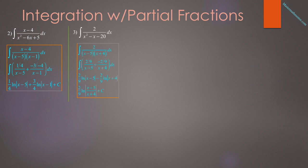In problem 3, we integrate 2 over (x² − x − 20). The denominator factors into (x − 5)(x + 4), giving two partial fractions. When x = 5 we get 2/9 for the first fraction; when x = −4 we get −2/9 for the second. This leaves us with (2/9) ln|x − 5| − (2/9) ln|x + 4| + C. We can factor out 2/9 and use the log subtraction rule to write this as (2/9) ln|( x − 5) / (x + 4)| + C.